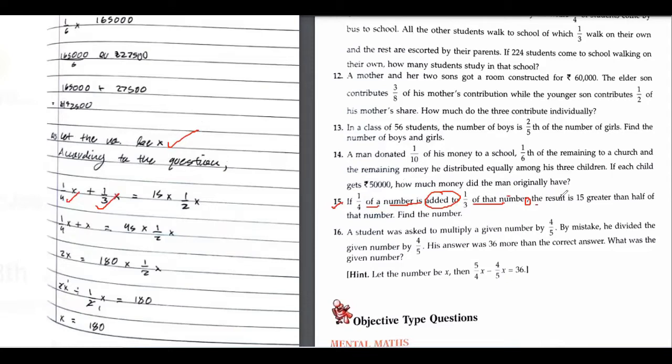Moving ahead, the result means equals to is 15 greater than half of that number. Now I want you to understand what you have done over here. 15 greater than - what do you mean by 15 greater than?